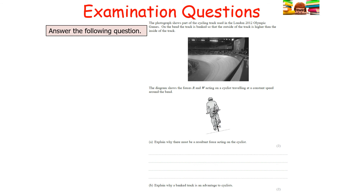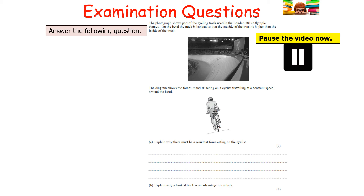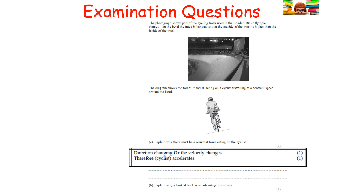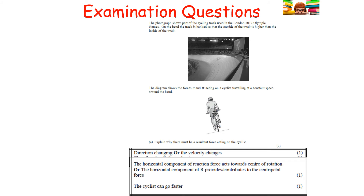Next question from the London 2012 Olympics cycling track: the track is banked so the outside is higher than the inside. Forces R (reaction) and W (weight) act on the cyclist. Explain why there must be a resultant force — the direction of the cyclist is continually changing as they go around the circle, so their velocity is changing, meaning there must be acceleration and hence a resultant force. The banked track is an advantage because the horizontal component of the reaction force R contributes to the centripetal force, allowing the cyclist to go faster.